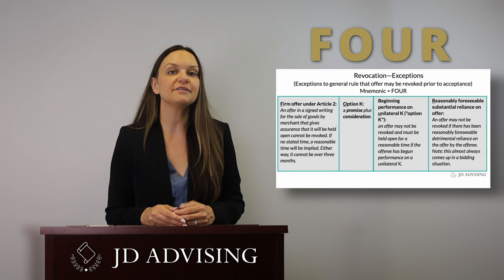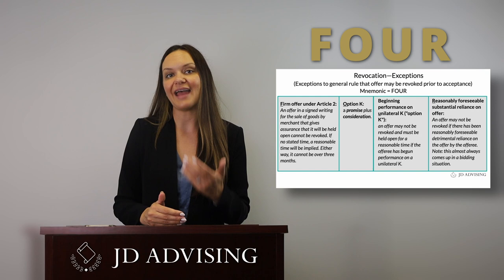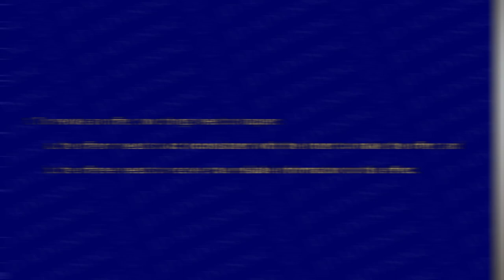When we first started talking about revocation, I said you should ask yourself two questions. First, can the offeror revoke his offer? And two, did the offeror revoke his offer? We have covered the first question. Now let's move on to that second question. In order to effectively revoke your offer — assuming it's an offer that can be revoked — you have to do two things: first, the offeror needs to act inconsistent with his intent to make an offer; and second, the offeree needs to receive true, reliable information to that effect.